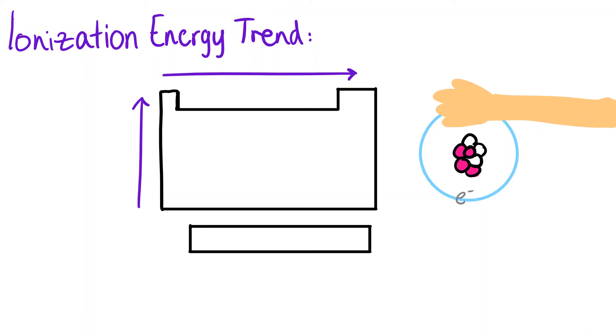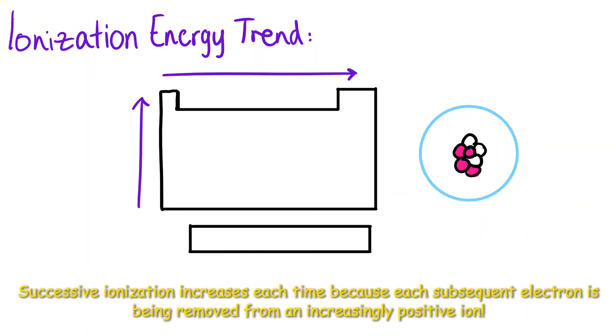Successive ionization energy is the amount of energy required to remove successive electrons in their successive shells. With each electron removed, ionization energy will increase because inner electrons are increasingly attracted to the nucleus.